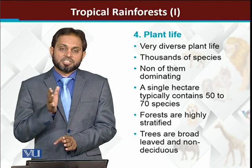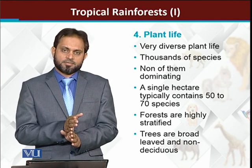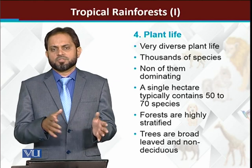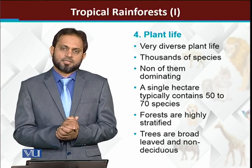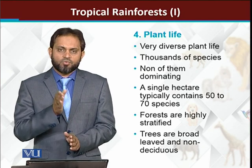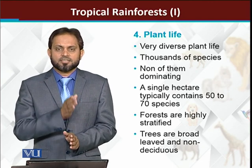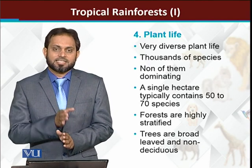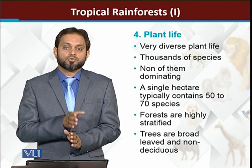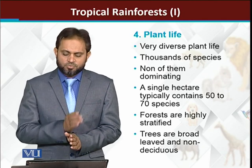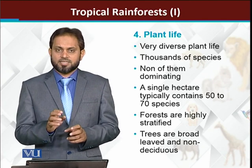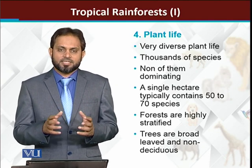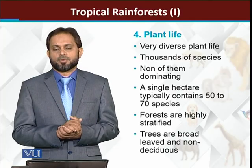If we compare tropical rainforests with temperate deciduous forests, in temperate deciduous forests one hectare has a maximum of 10 to 20 species, while in tropical rainforest the species richness is up to 70 species per hectare. Most of the plants in tropical rainforests are evergreen and broad-leaved plants.